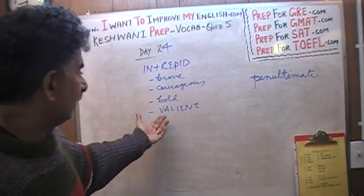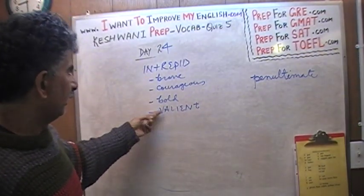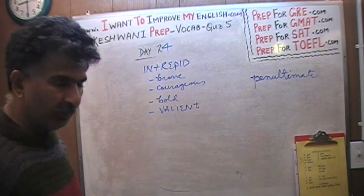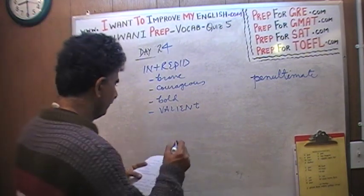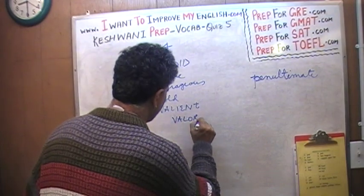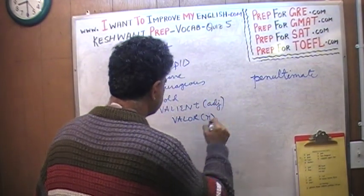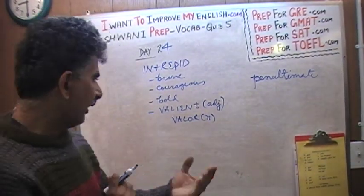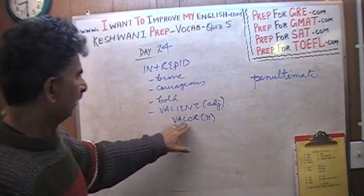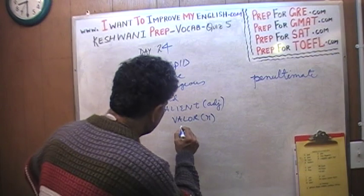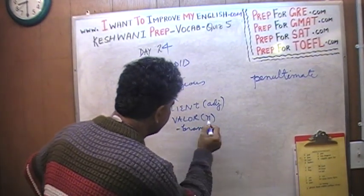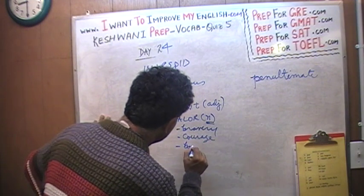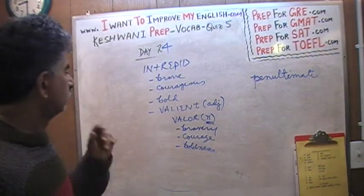So we learned one more word from it: 'valiant.' Valiant means exactly the same things — to be brave, courageous, bold. And if you're valiant, you are said to have 'valor.' Valor simply means having courage, having bravery. So valiant relates to bravery, courage, boldness.